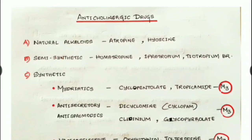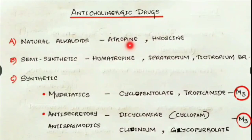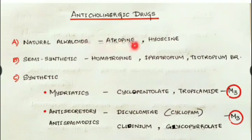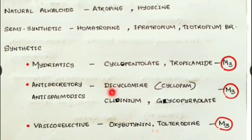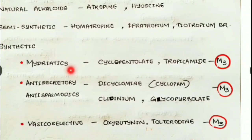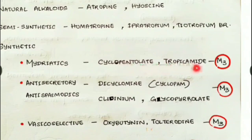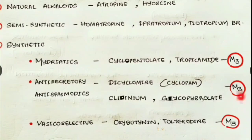Anticholinergic drugs act opposite to cholinergic drugs. The typical drug is atropine. Classification: first, natural alkaloids — atropine and hyoscine; second, semi-synthetic — homatropine, ipratropium, and tiotropium bromide. Synthetic drugs include mydriatics (cyclopentolate and tropicamide), which inhibit M3 receptors and cause mydriasis — the opposite of the miosis caused by ACh.